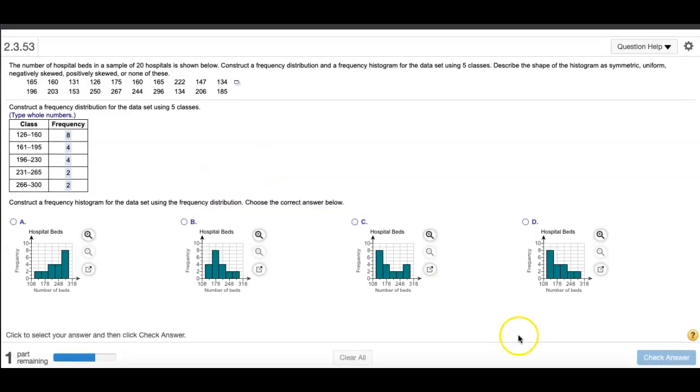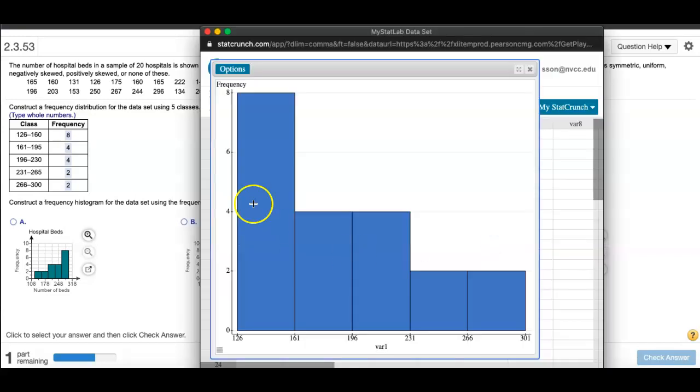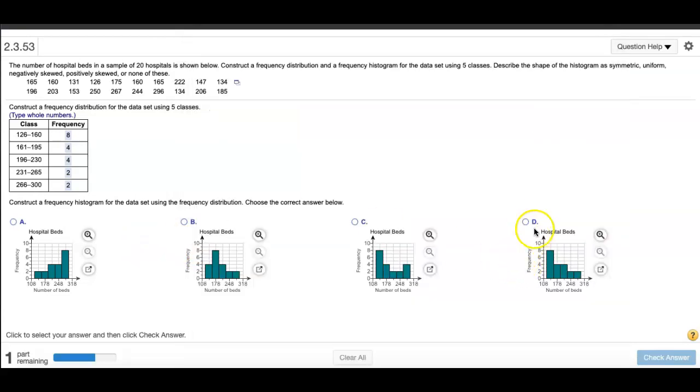Now I already had the histogram. Let's see what did it look like. It was tallest bar on the left, two of the same height, two of the same height. But it was going down, had a longer tail to the right, a right skewed or positively skewed distribution. So I'll come back over here and click on that picture.